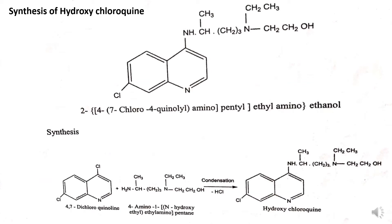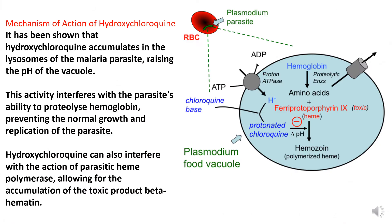The next drug is hydroxychloroquine. Its synthesis is a single-step reaction in which 4,7-dichloroquine and 4-amino-1-N-hydroxyethylaminopentane fuse together, eliminating one molecule of HCl, to form hydroxychloroquine. The mechanism of action of hydroxychloroquine is similar to chloroquine. Hydroxychloroquine accumulates in the lysosome of the malarial parasite, raising the pH of the food vacuole.